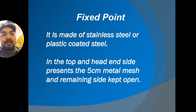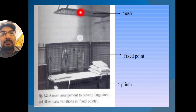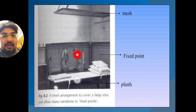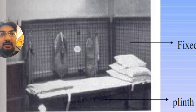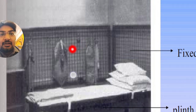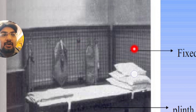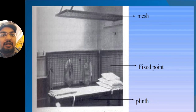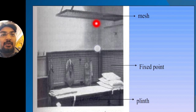Starting with the fixed point — it is made up of stainless steel or plastic-coated steel. The top and head side present a 5-centimeter metal mesh, with the remaining side kept open. It consists of small squares, each 5 centimeters in length and breadth. This is called the fixed point. In many colleges, only the top has the fixed point.